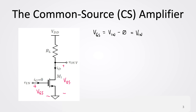I have also annotated where VGS and VDS are in the circuit. We start off by assuming that the transistor is in saturation and determining VGS from the circuit. If we look at the circuit, the gate is connected to VIN and the source is connected to ground, so VGS equals VIN minus zero, which is just VIN. So the input voltage VIN sets the VGS of the MOSFET.